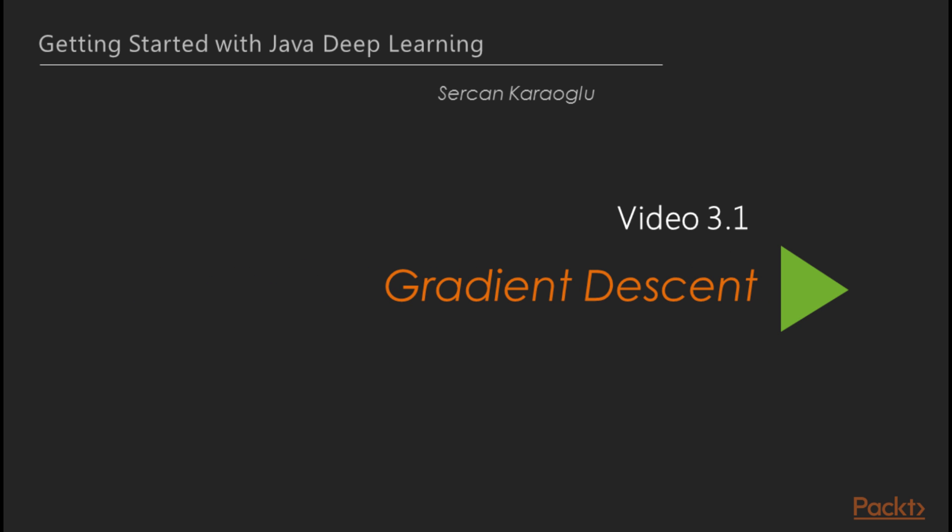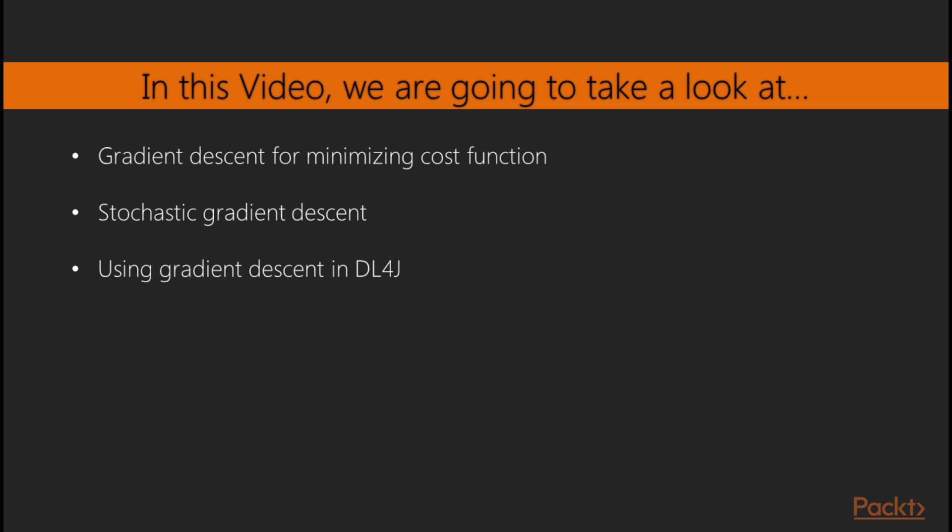Now, we move on to the first video of this section that deals with explaining the gradient descent. Gradient descent is one of the most important building blocks of neural networks. Before using neural networks in your applications, first you should watch and learn this topic and get better insights about how neural networks work. In this video, we are going to take a look at gradient descent as a cost minimizer function.